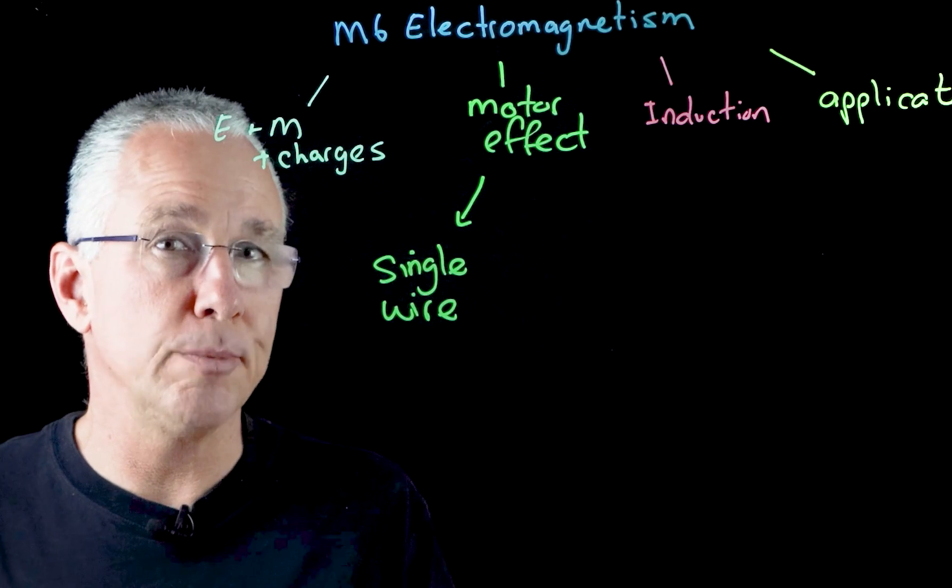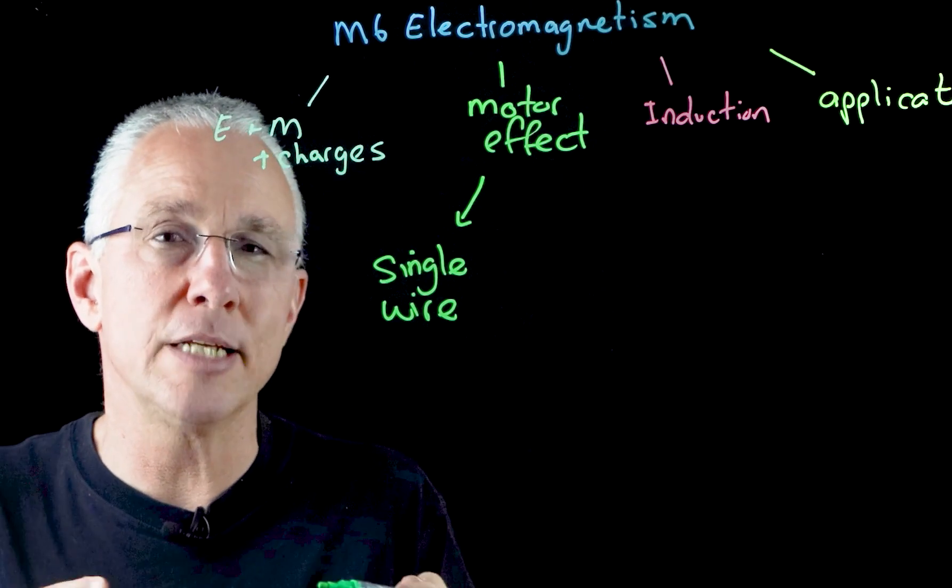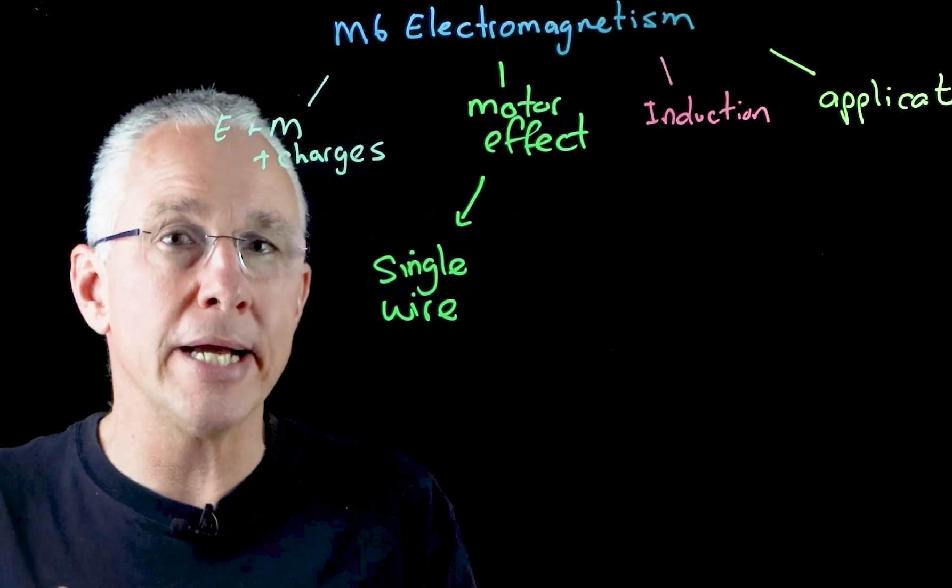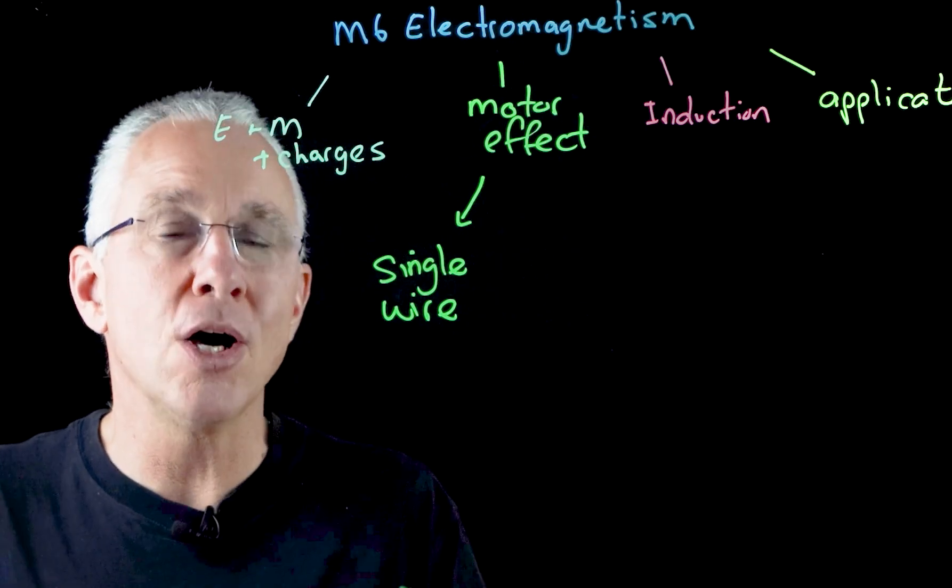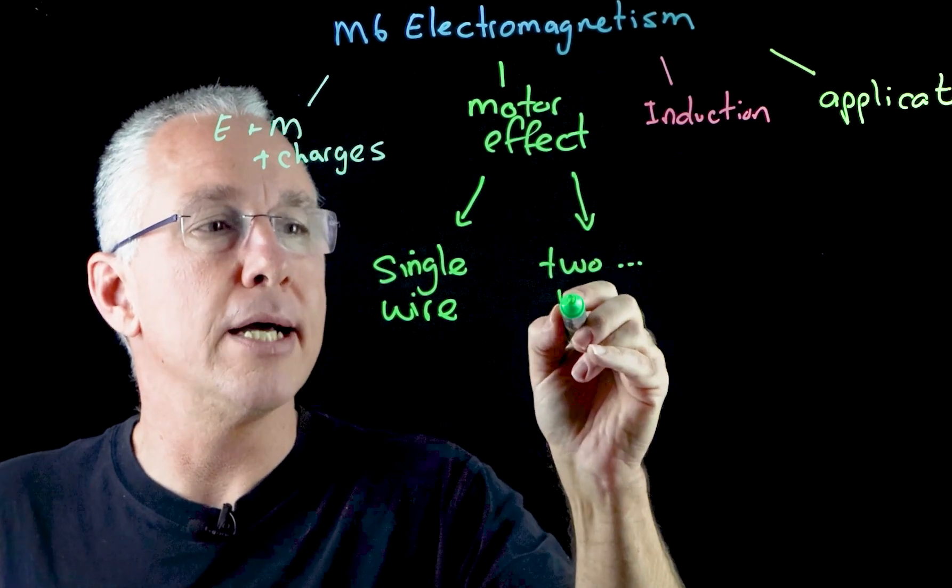The other situation that you'll be looking at is where you have two current bearing wires side by side, so each wire experiences the magnetic field of the other wire. And so what we now have is two or more wires.